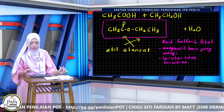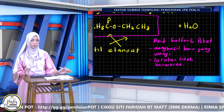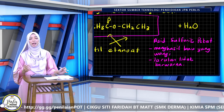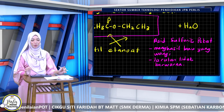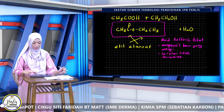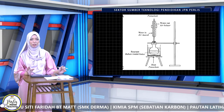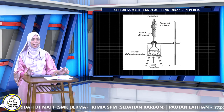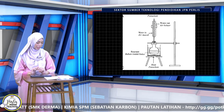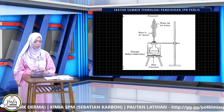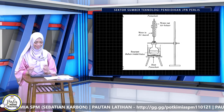Ini keadaan untuk hasilkan ester: kita perlukan asid sulfurik pekat. Pemerhatian dia, dia akan menghasilkan bau yang wangi dan larutan yang tidak berwarna. Ini gambar untuk hasilkan ester, iaitu penghasilan secara reflux. Kalau peneutralan kita ada titrasi atau pentiteratan; untuk ester, kita ada kaedah nama secara reflux.